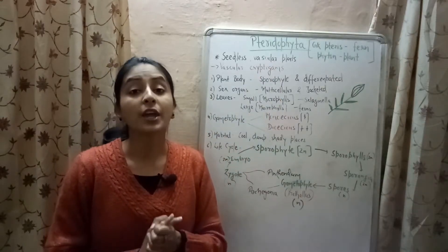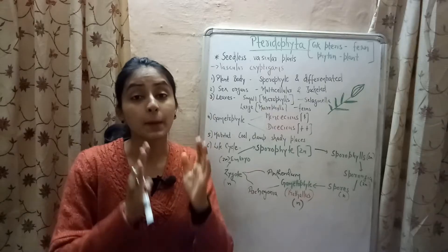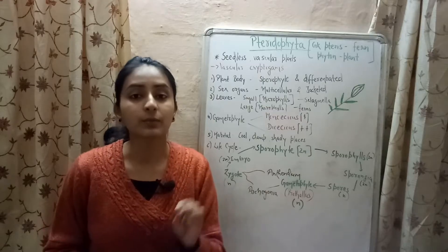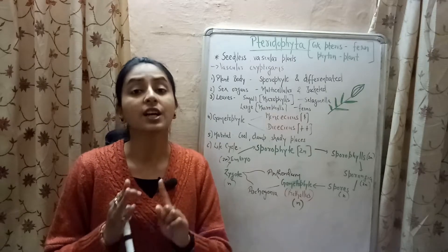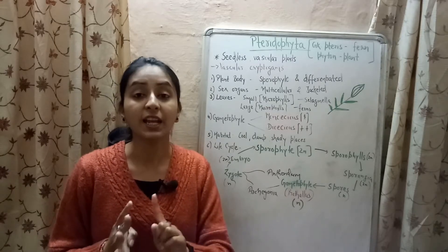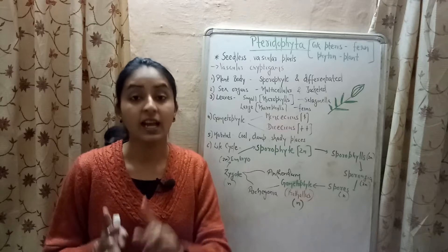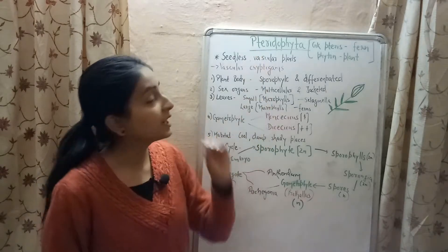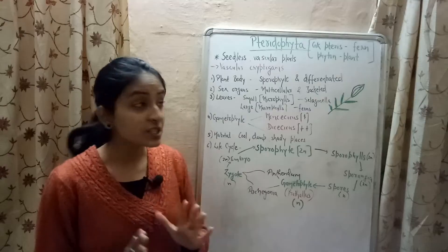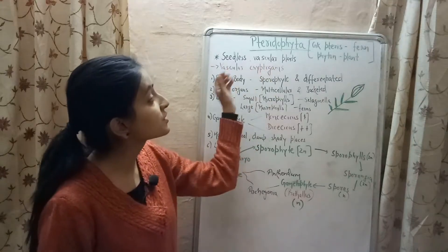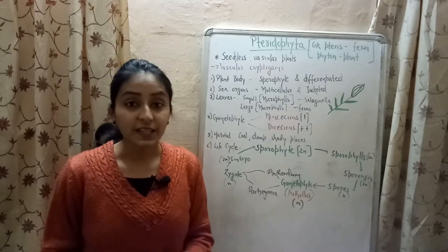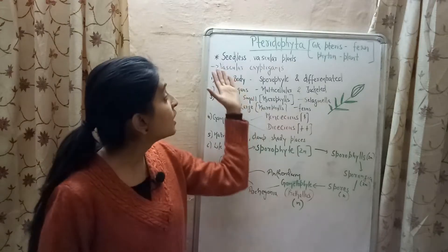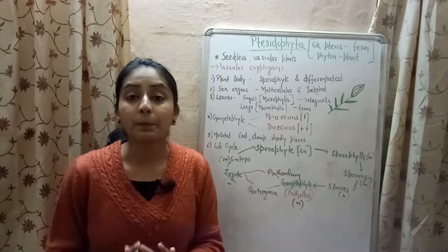Why is it cryptogams? Because this is sub-kingdom Cryptogamae. There are three divisions: Thallophyta, Bryophyta, and Pteridophyta. Out of these three divisions, Pteridophyta is the division in which the vascular system is present. That is why the division Pteridophyta is known as vascular cryptogams.